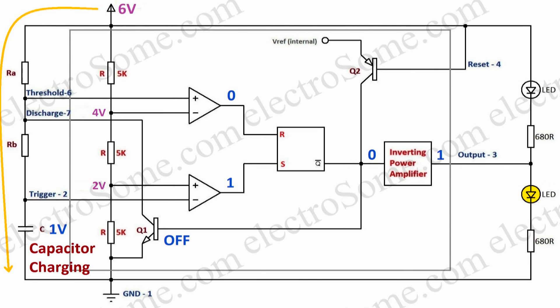When the circuit is powered, the capacitor starts charging from the supply. The output of the lower comparator will be high since the capacitor voltage is less than 2 volts. This makes the output remain high.